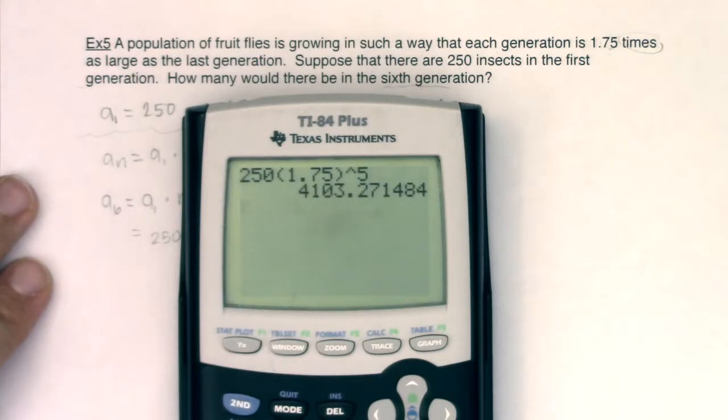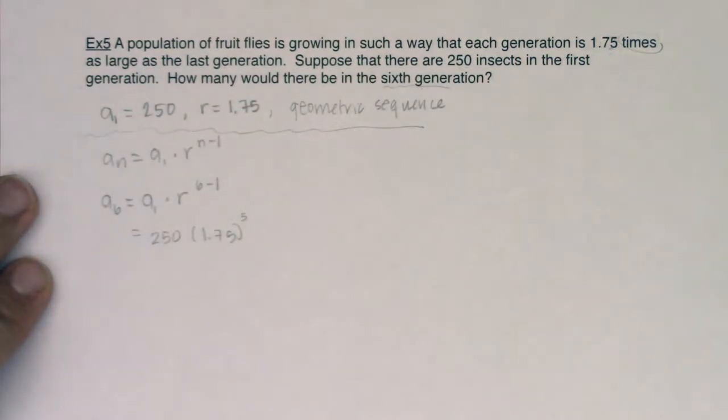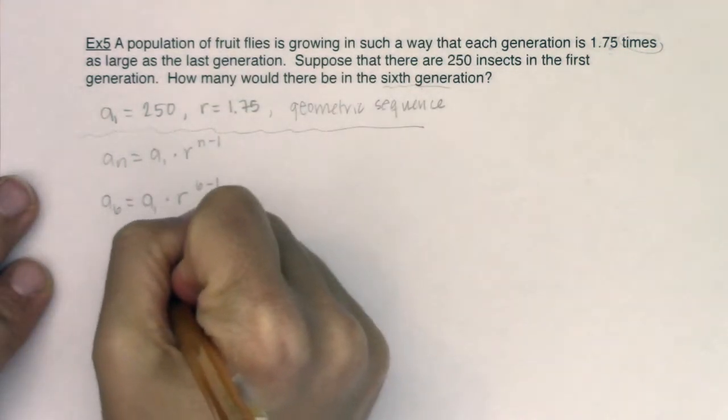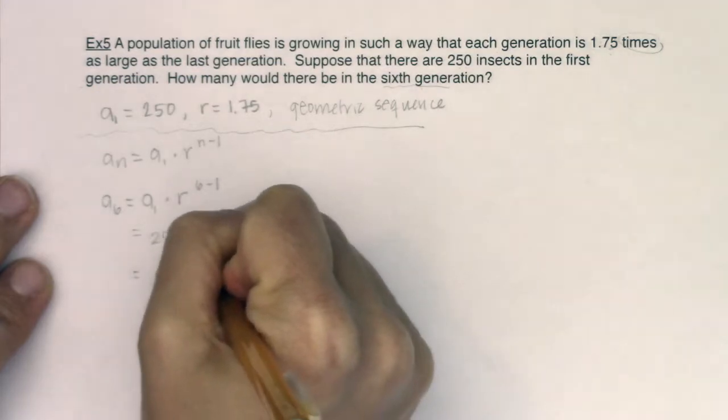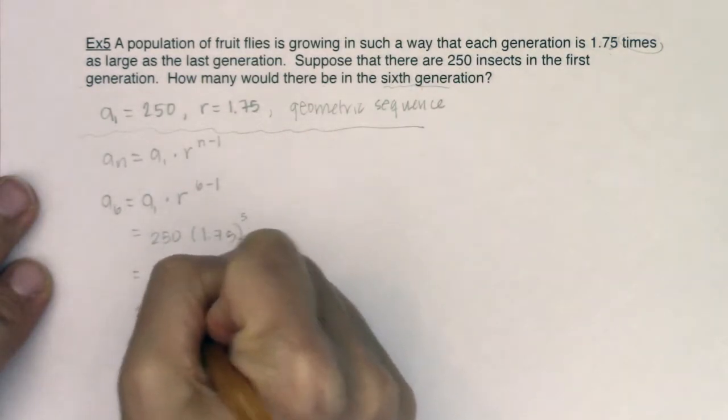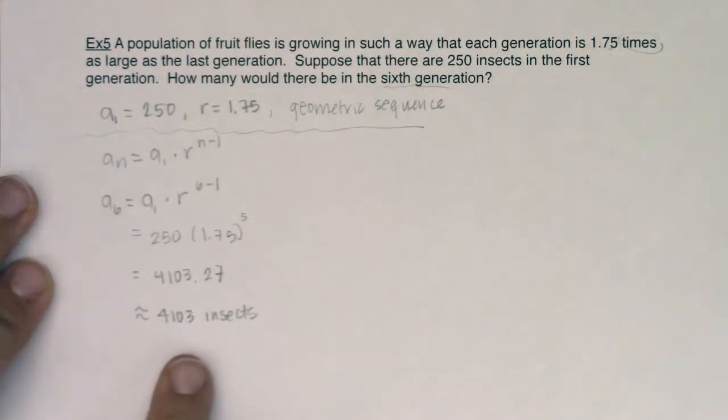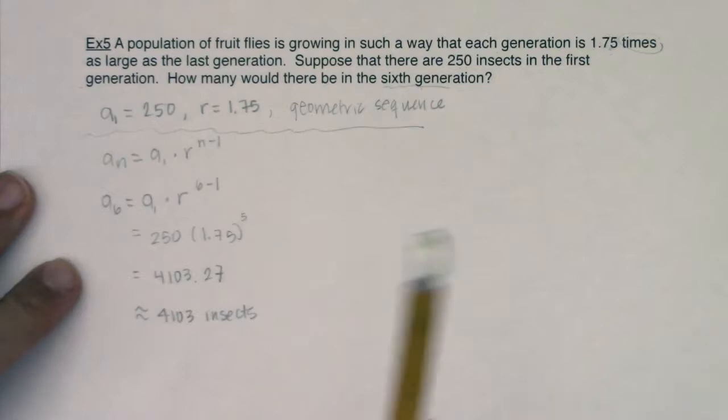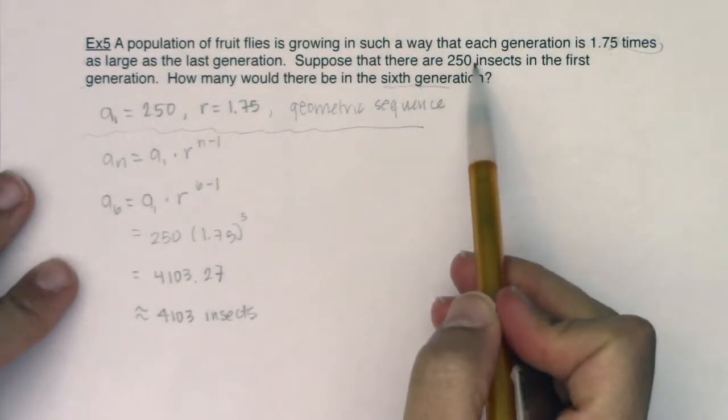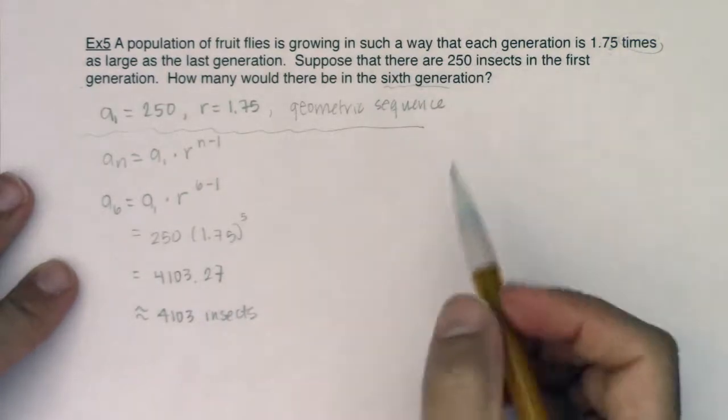So we have 4103.27. So I've got 4103.27. So basically, I'm looking at about 4103 insects. So by the time the sixth generation is rolling around, this population of insects has really grown. It's grown from 250 to 4103.